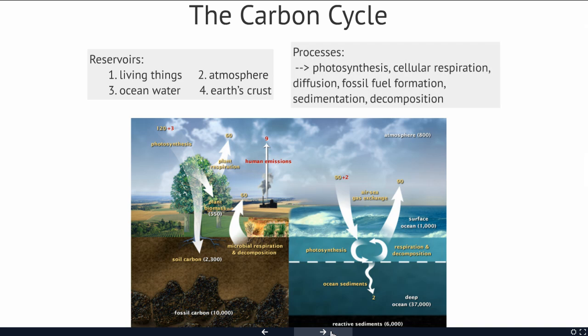You have a whole series of processes that move carbon from one reservoir to another. Photosynthesis is a process of taking carbon from the atmosphere and moving it into living things. Cellular respiration is the opposite—taking carbon from living things and moving it back into the atmosphere.